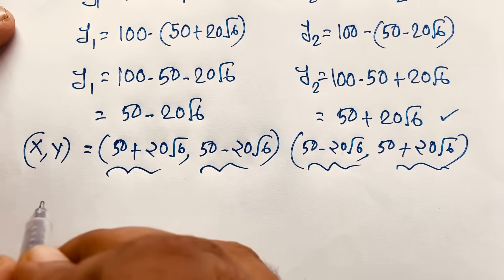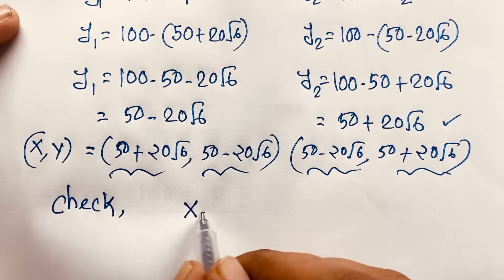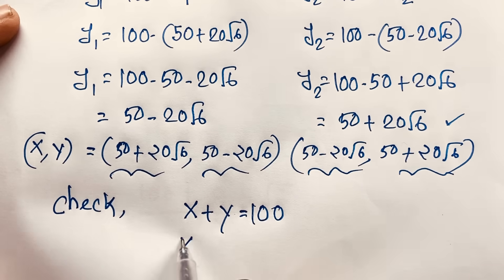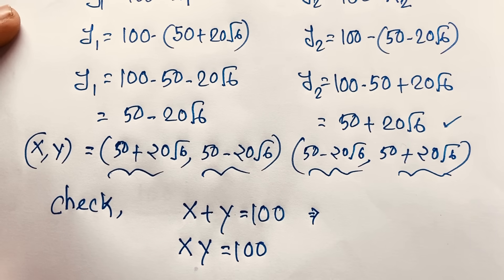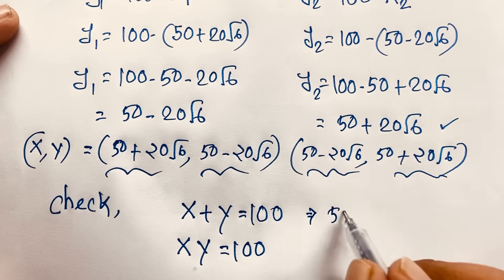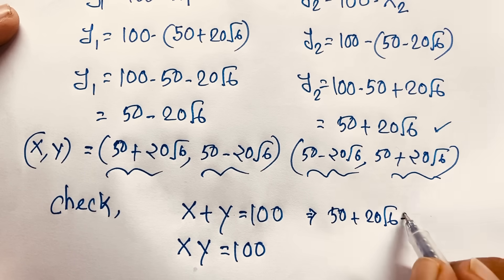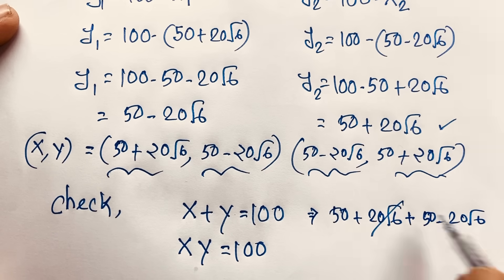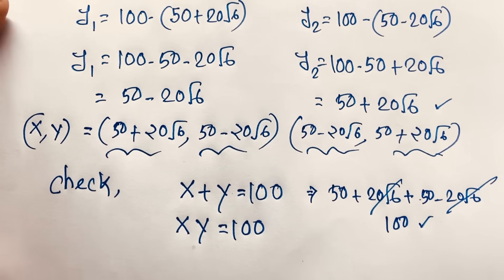Let's verify our question. x plus y is equal to 100, and xy is equal to 100. For x plus y: (50 plus 20 square root of 6) plus (50 minus 20 square root of 6). The square root terms cancel out, and 50 plus 50 is 100. So left-hand side and right-hand side are both equal.